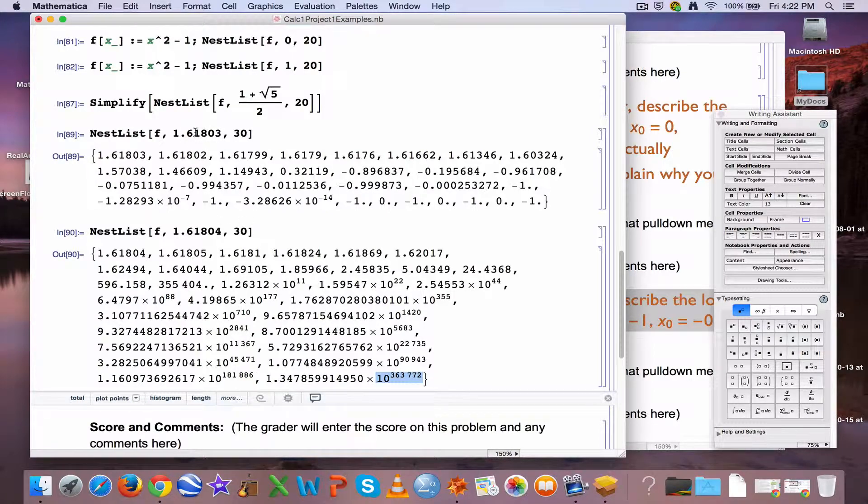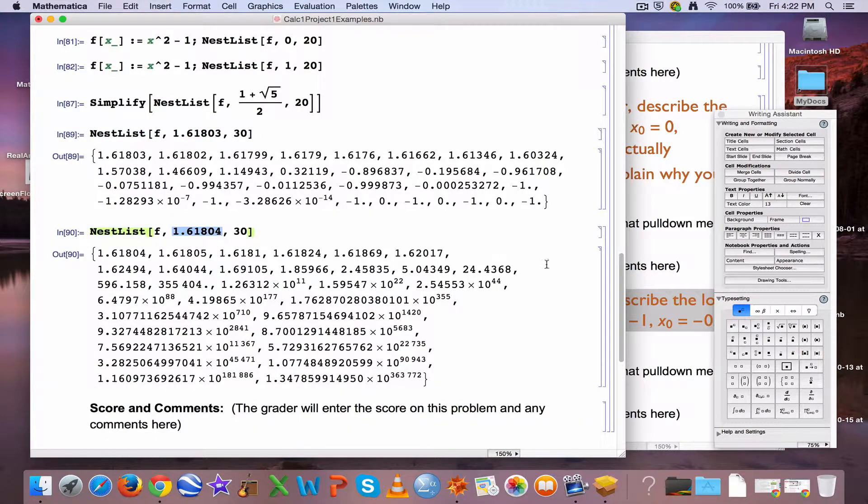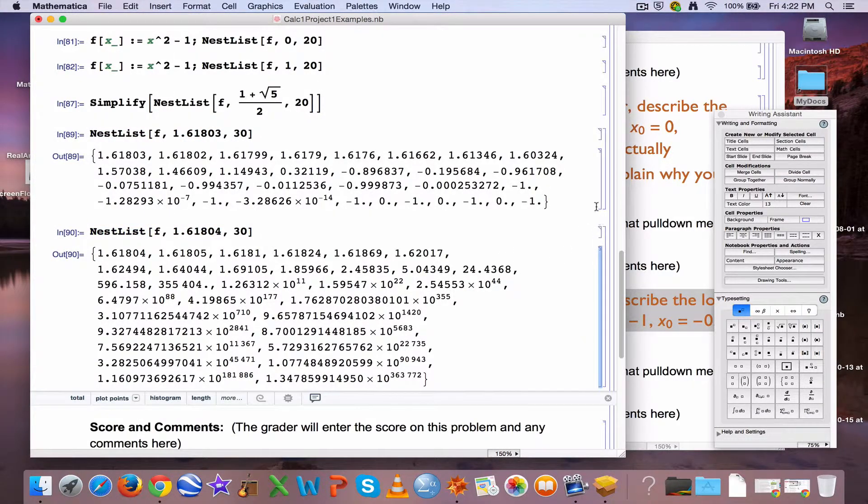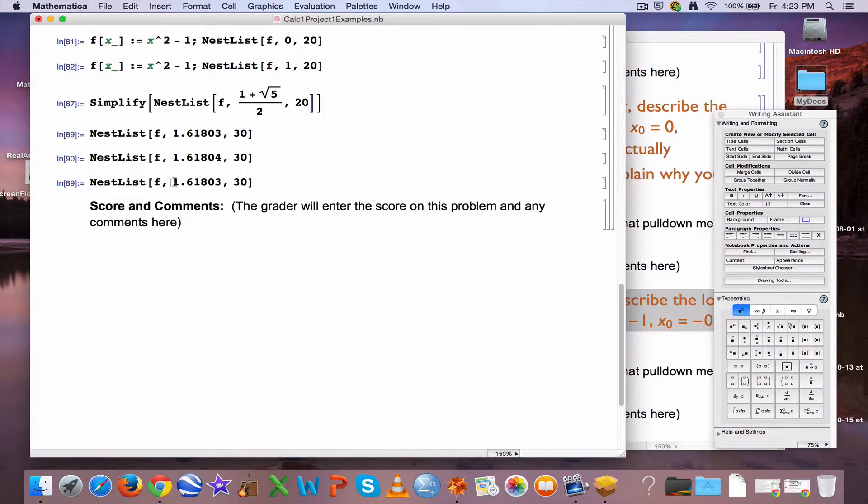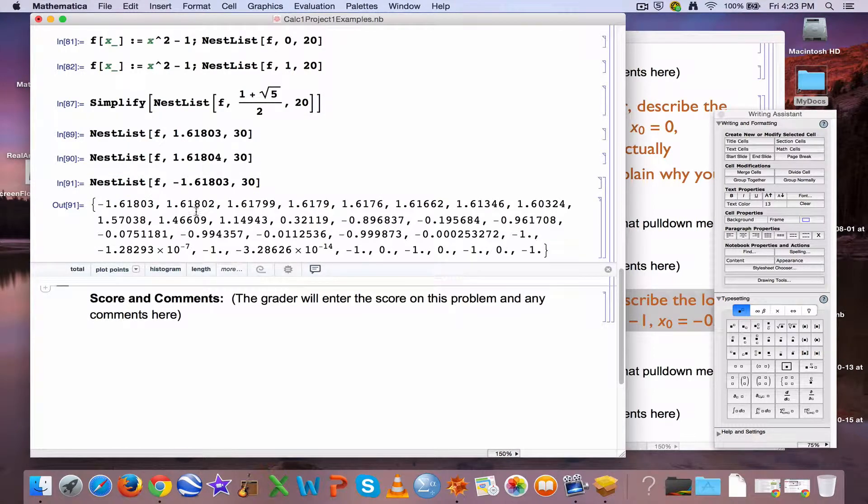Okay, so something radically different is happening when we're just below the fixed point versus just above the fixed point. How about the negative versions of those numbers? They're opposites here. Put a negative sign in front of this one.